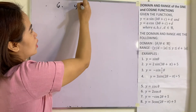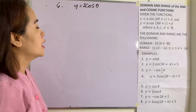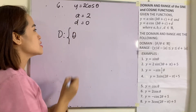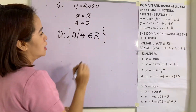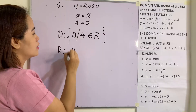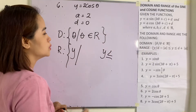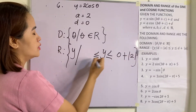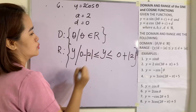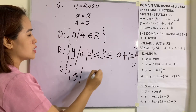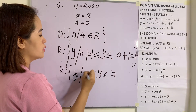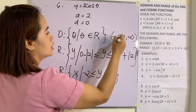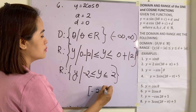Example 6: y = 2·cos θ. Here a = 2 and d = 0. The domain is the set of all θ in the real numbers. For the range: y ≤ 0 + |2| and y ≥ 0 − |2|, giving us y ≤ 2 but y ≥ −2. In interval notation, domain is (−∞, +∞) and range is [−2, 2].